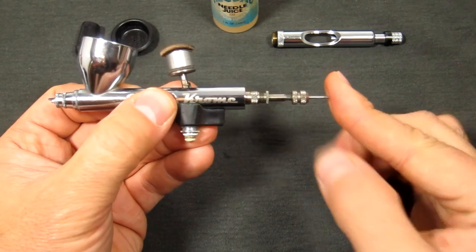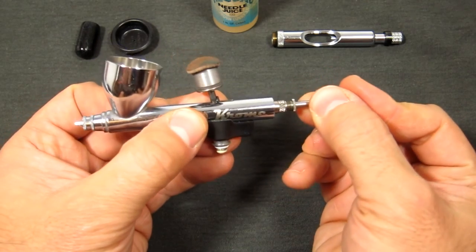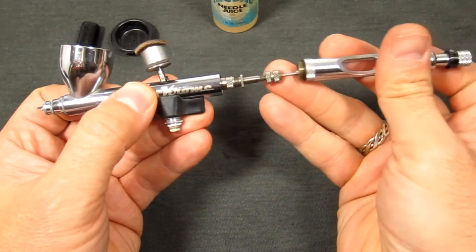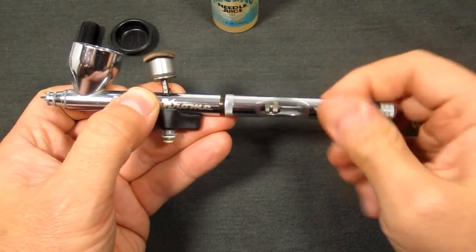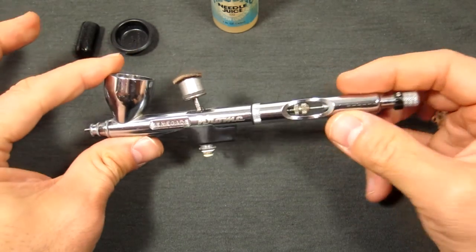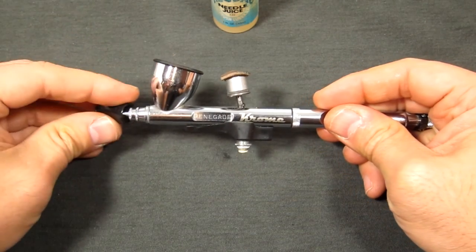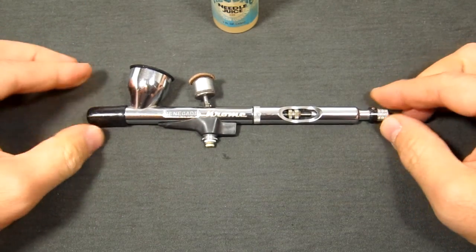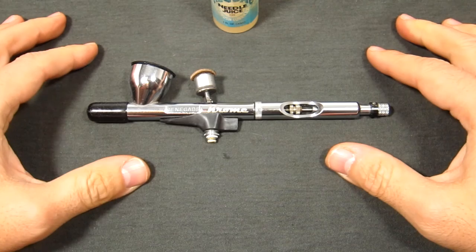And then just gently press that while you turn the needle chuck, and that's it. You don't have to really crank it down, you don't have to use any wrenches or anything like that—remember everything is finger tight. So there we are, that is the Renegade chrome. All the Renegade series are basically put together the same.